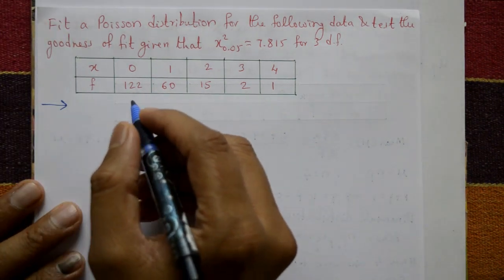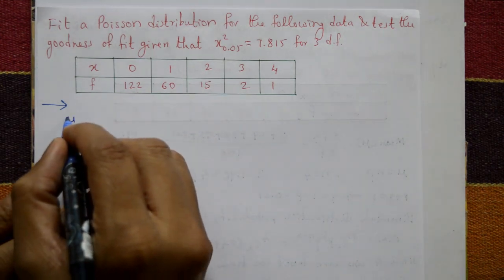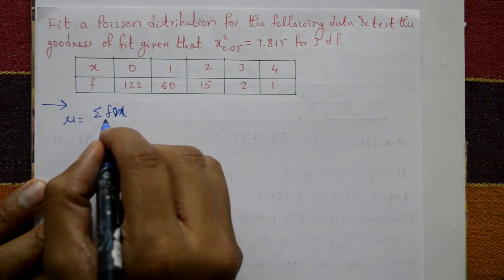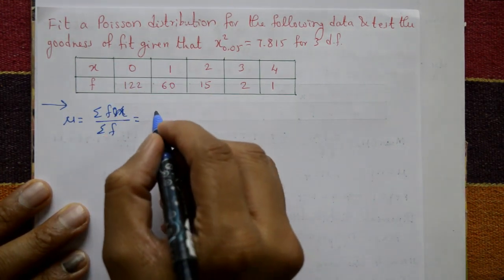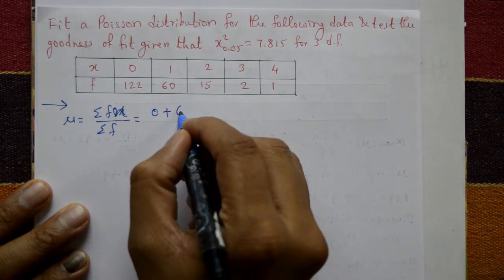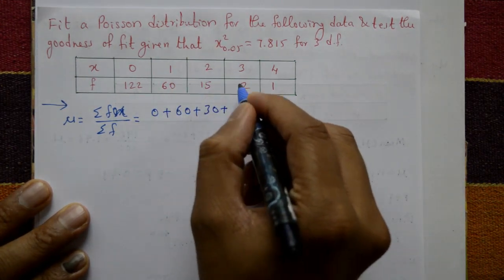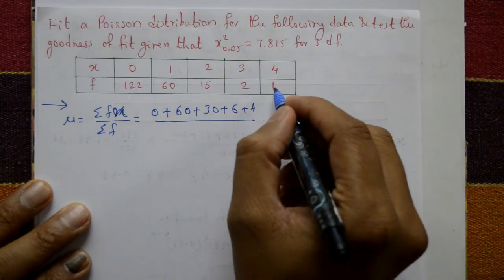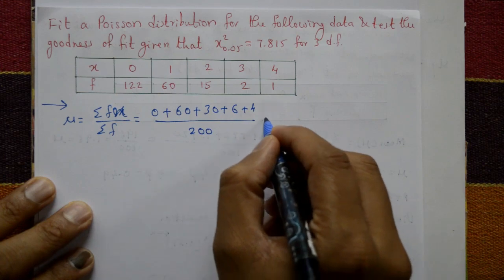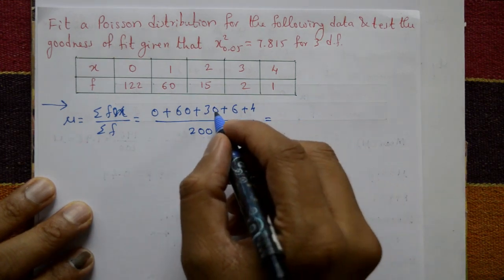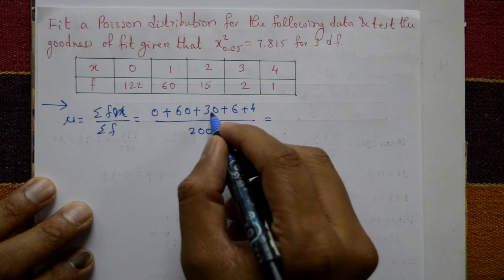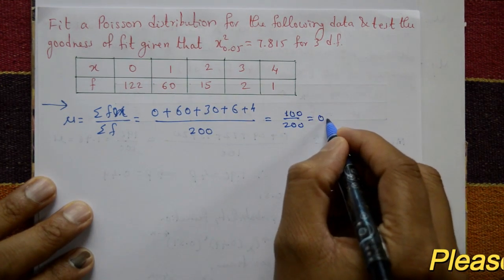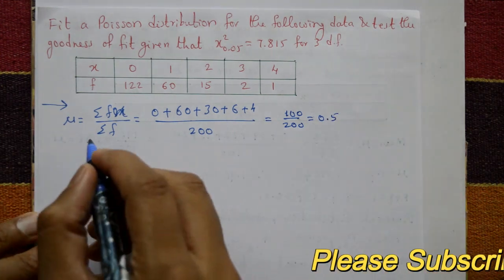First, we compute the mean. Mean equals summation of fx divided by summation of f. Multiplying: 0×122 + 1×60 + 2×15 + 3×2 + 4×1 gives numerator = 100, and the total frequency summation is 200. So mean equals 100 divided by 200 equals 0.5.